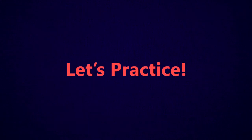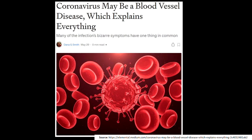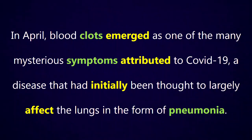Let's practice with some real sentences from a recent news article called 'Coronavirus May Be a Blood Vessel Disease.' There's a lot of scientific vocabulary in coronavirus articles that can be difficult to understand, so let's practice identifying word types. We want to figure out whether highlighted words are nouns, verbs, adjectives, adverbs, prepositions, conjunctions, or determiners. The first sentence: 'In April, blood clots emerged as one of the many mysterious symptoms attributed to COVID-19, a disease that had initially been thought to largely affect the lungs in the form of pneumonia.' It's a statement — it's got a period at the end.